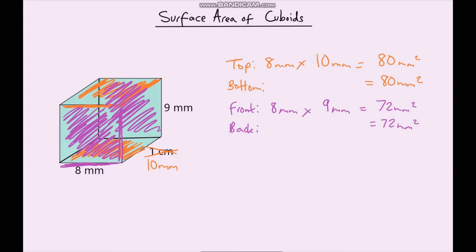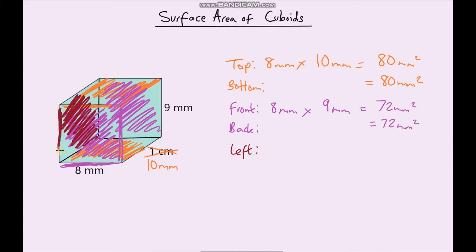Now the last one — let's go for a maroon colour. So let's go for the left. The left is going to be the height, which is 9 millimetres, multiplied by the depth, which is 10 millimetres, which gives us 90 millimetres squared.